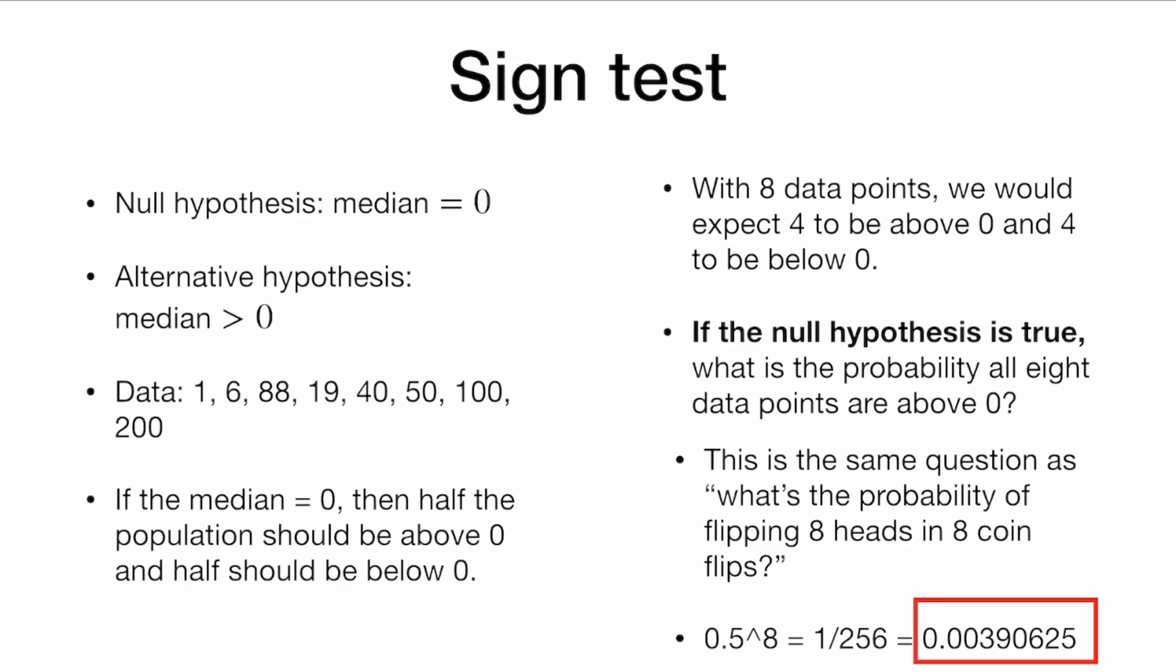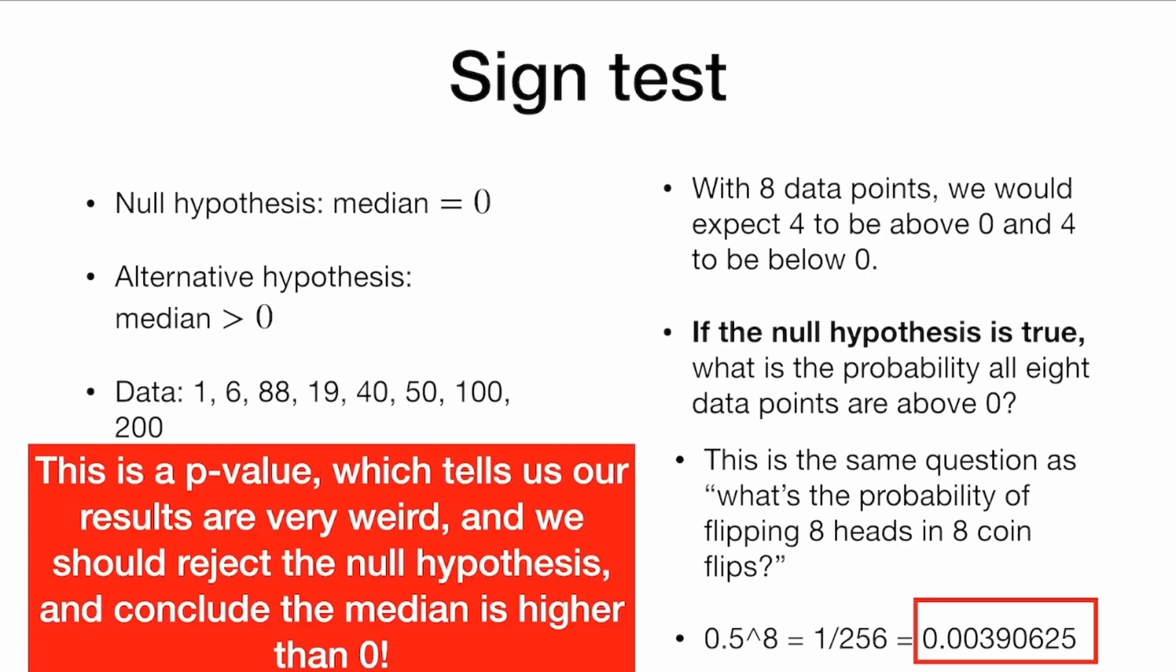And this value here is called a p-value. And this tells us our results are very, very weird. If the median was zero, then the probability that all of our values would be above zero is very, very small. And this tells us that our starting assumption that the median is zero is probably false and that we should reject it and conclude the alternative that the median is above zero.